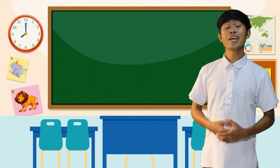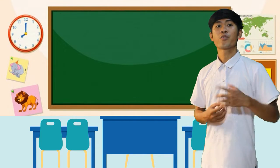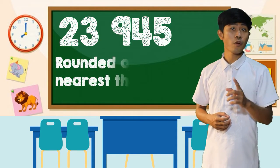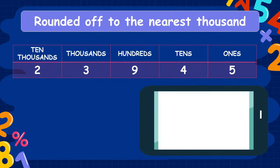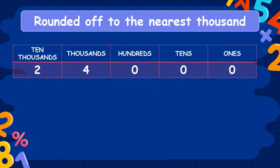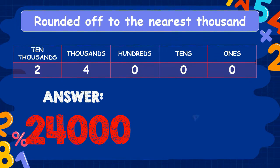To understand more, we have another example. Round the number 23,945 to the nearest thousands. The digit in the thousands place is 3, and the digit to its right is 9. According to the steps, since 9 is greater than 5, we increase the digit by 1 — so 3 becomes 4. Then we replace every digit to its right with zeros. Therefore, 23,945 rounded to the nearest thousand is 24,000.